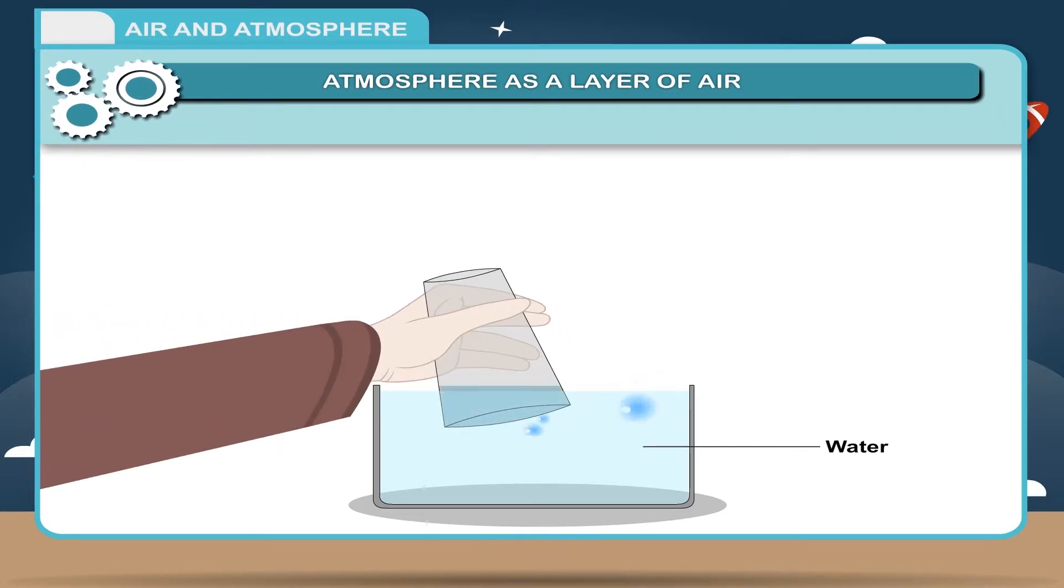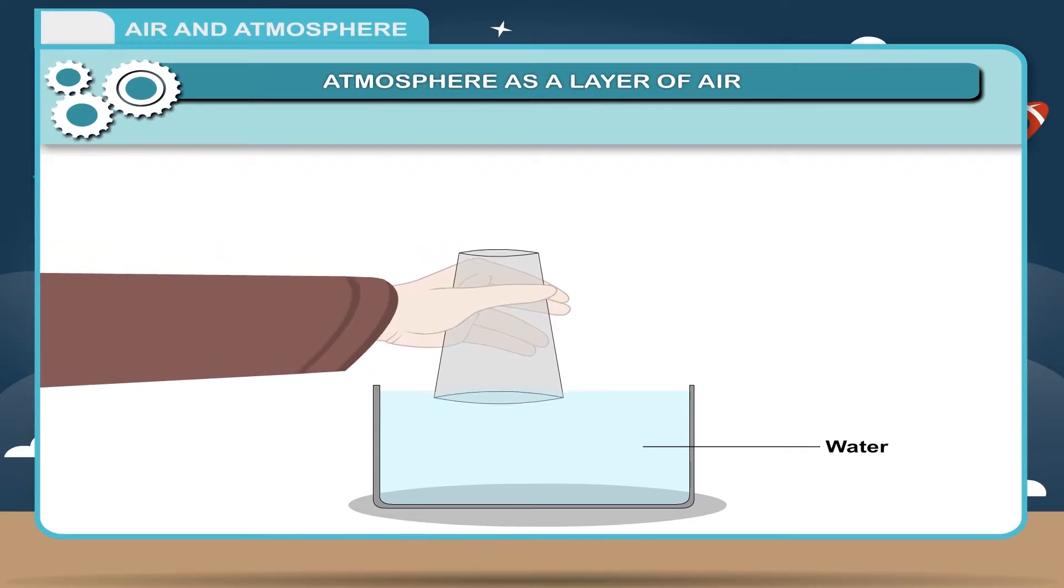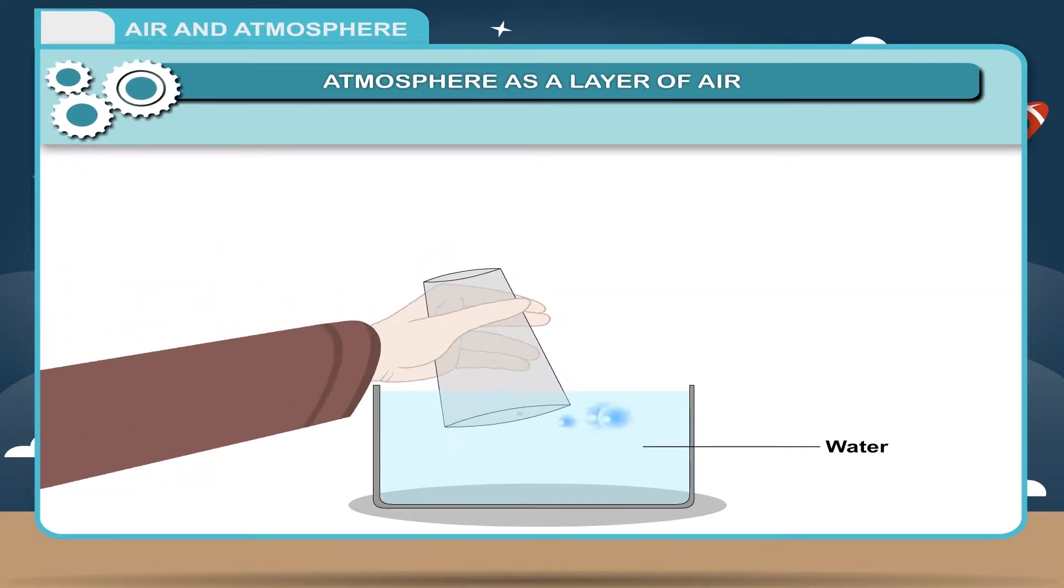You will observe that bubbles come out of the tumbler and water rushes in to take its place. Conclusion: when the tumbler appears empty, only air is inside. When water fills the tumbler, air must leave. This means air was occupying that space. Hence, air occupies space.